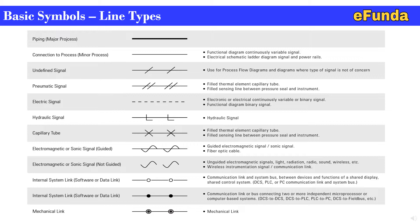A thin dotted line means an electronic or electrical continuously variable or binary signal in functional diagrams. Hydraulic signal is represented by a line through L-sections. The capillary tube — a straight line with two cross signals — represents a field thermal element capillary tube or field sensing line between pressure seal and instrument. Electromagnetic or sonic guided signal is a single line with two cross-sectional sinusoidal signatures. Unguided electromagnetic or sonic signal shows only two sinusoidal waves, representing unguided light, radiation, radio, sound, or wireless. Wireless instrumentation signal, communication link, internal system link, software, or data link are also covered.